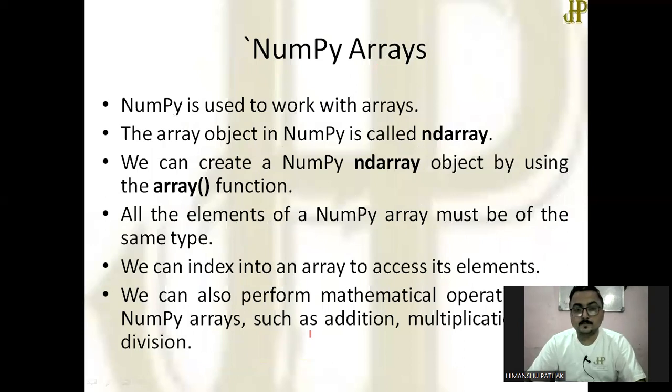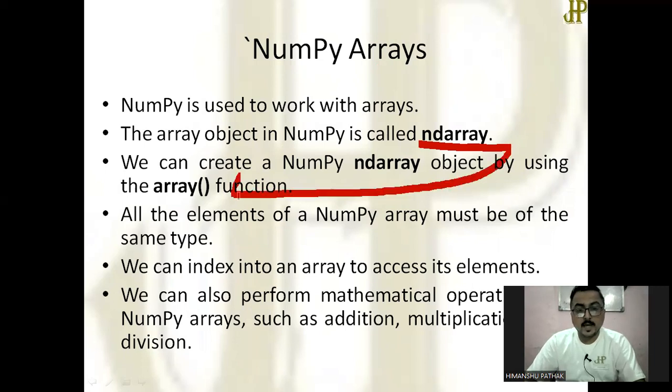What is NumPy array? Array is a contiguous memory location in which similar type of data can be stored. In NumPy, it is called ndarray, and it is achieved with the help of function array. All the elements of the NumPy array must be of same type. All the functionality that you already know can be done with NumPy array: indexing can be done, operations like addition, multiplication, division can be performed.